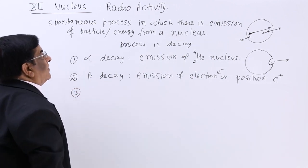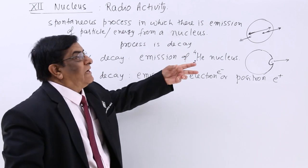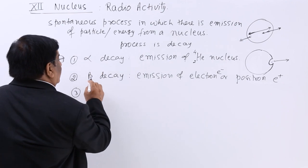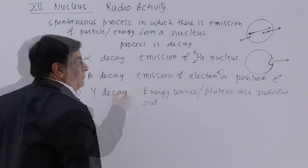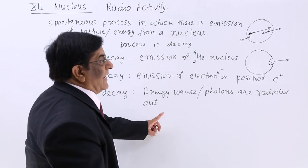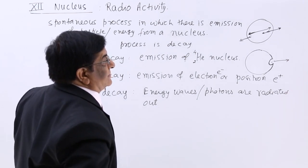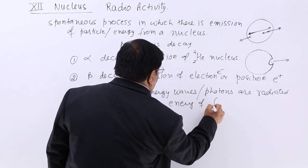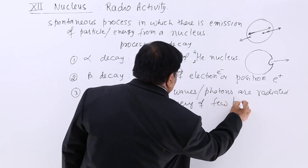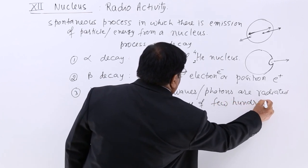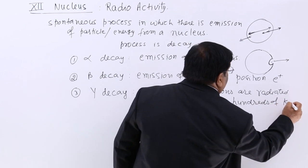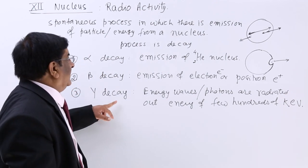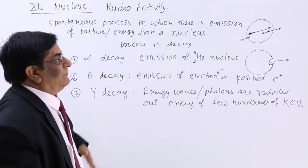There is a third type of decay where no particle is emitted out, but gamma rays are emitted out. That we call gamma decay. Gamma rays also carry energy — a few hundred keV. So those are the three types of decays: alpha, beta, and gamma decay.